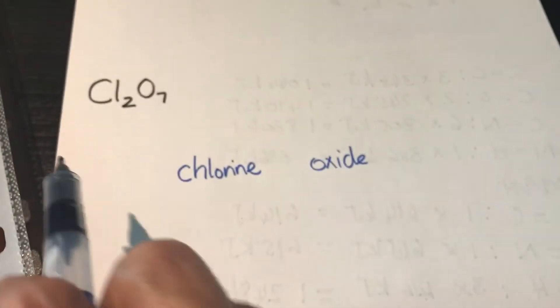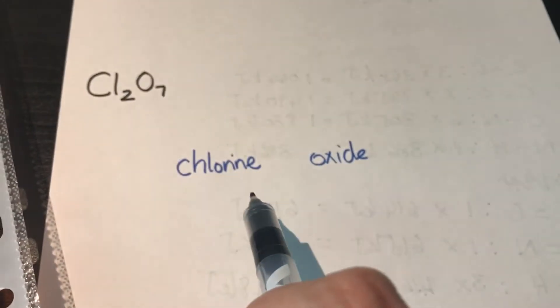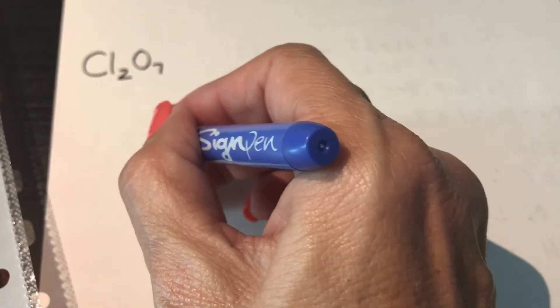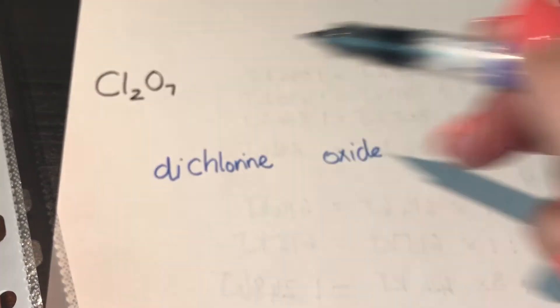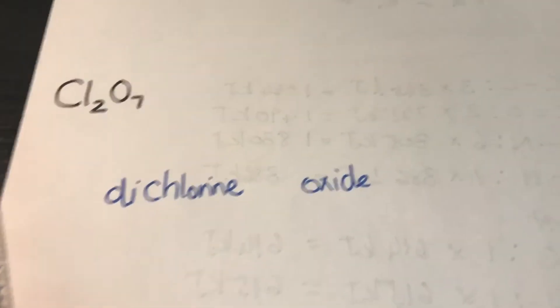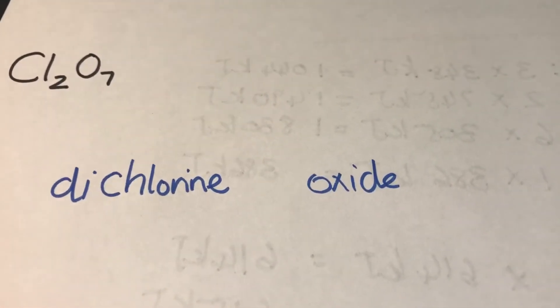But I don't just have one. It won't remain just chlorine because I have two. Because there's two, I will put the prefix di. So I have dichlorine. For oxygen, I have seven oxygens. Oxygen becomes oxide, and seven is hepta.